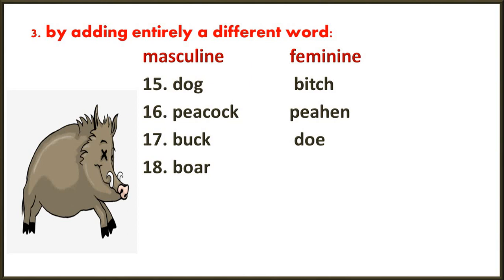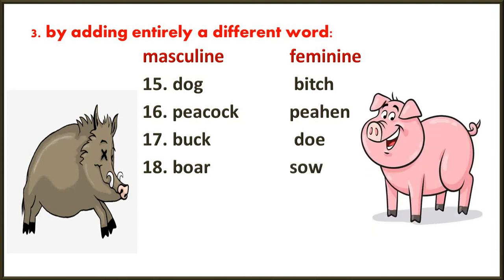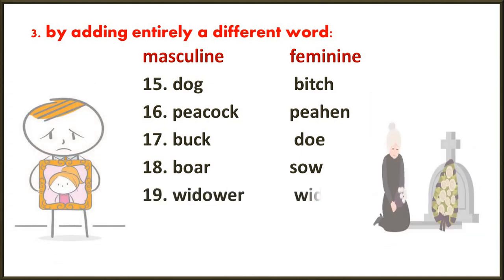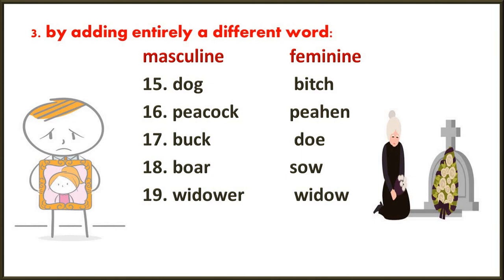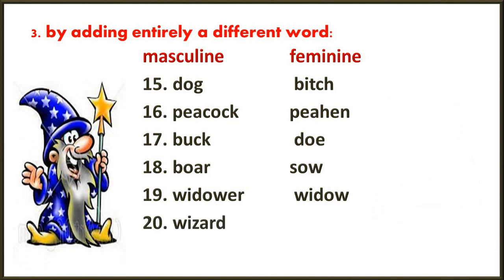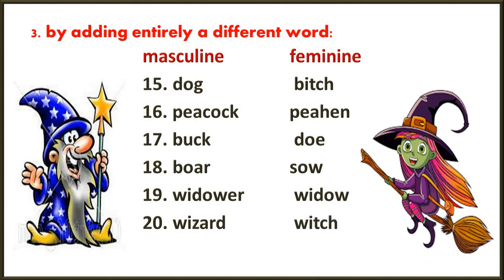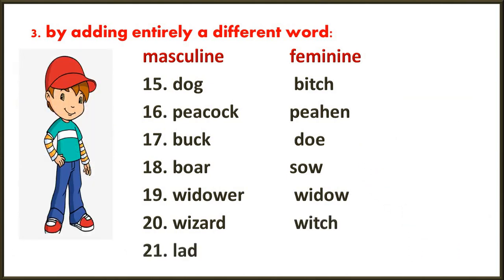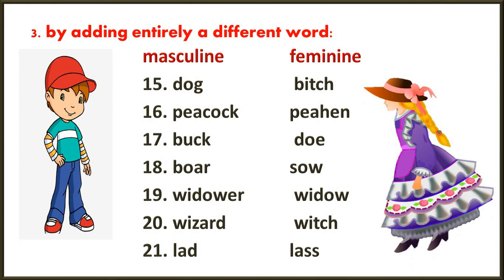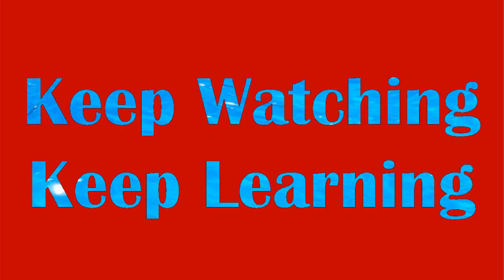Boar / sow — boar is a male pig and sow is a female pig. Widower / widow — a widower is a person who lost his wife, and a widow is a lady who lost her husband. Wizard / witch — wizard means magician, a male magician. Lad / lass — lad means a smart boy and lass means a beautiful girl. So children, that's all about gender.